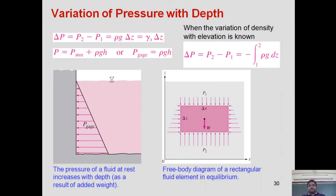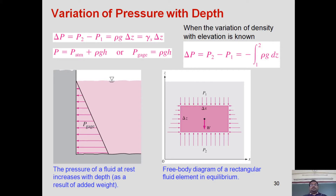If somebody asks for the absolute pressure, you have to add the ρgh value to the atmospheric pressure, because absolute pressure is defined as pressure measured with respect to atmospheric pressure. If we are going above atmospheric pressure, it is called gauge or positive pressure. If we are going below atmospheric pressure, it is called negative pressure or vacuum pressure.